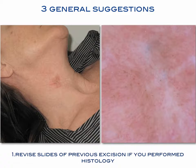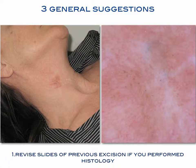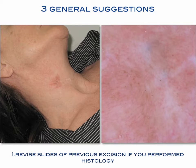Finally, we have three general suggestions. First of all, to revise the slides of previous excisions if histology was performed — like in this case of recurrent melanoma, where the first histology was of a suspicious melanocytic lesion, and after recurrence and revision of the histology, we came to the diagnosis of superficial melanoma on the neck.